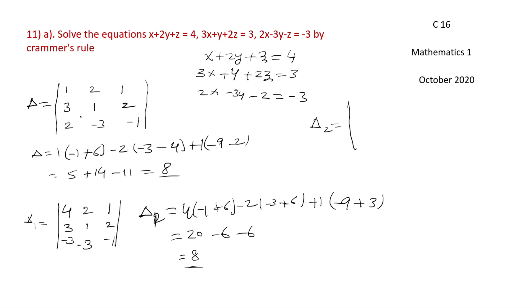For D2, the second column is replaced with the constants. The first column remains 1, 3, 2; the second column becomes the constants 4, 3, minus 2; and the third column remains 1, 2, minus 1.